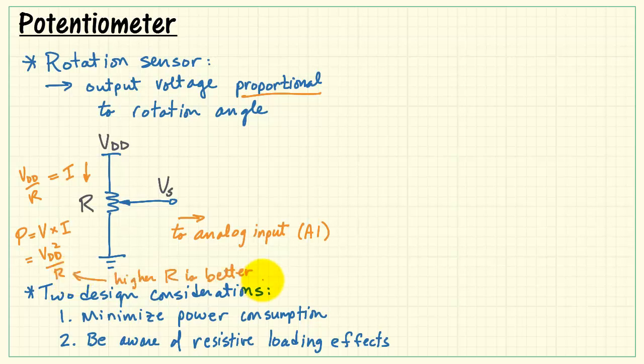From this, we see that it would be better to have resistance as high as possible. That will minimize the amount of power required by the potentiometer.